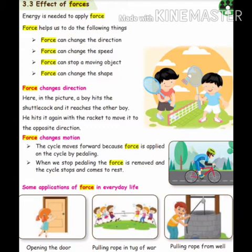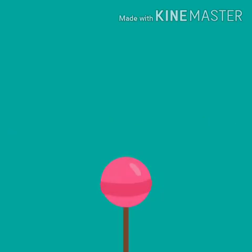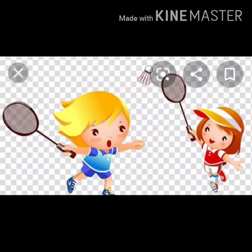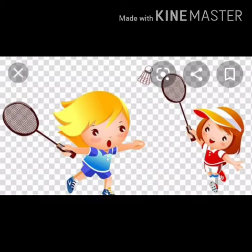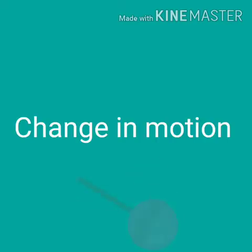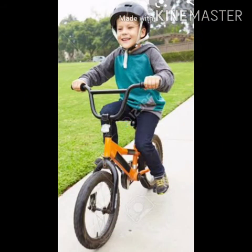I hope you all have understood how force changes direction and motion, that is speed. Now let's look at some more examples. The first example is for change in direction. Look at the picture — both girls are playing a game called shuttlecock. The cock moves here and there while hitting it. The force applied is hitting, and the ball moves in direction from here to there and back, that is forward and backward.